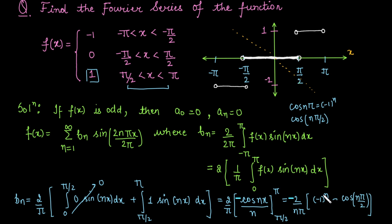Substituting bₙ into the summation gives the final Fourier series for this function over [−π, π]. Now we move to the next question: find the Fourier series of the second function.